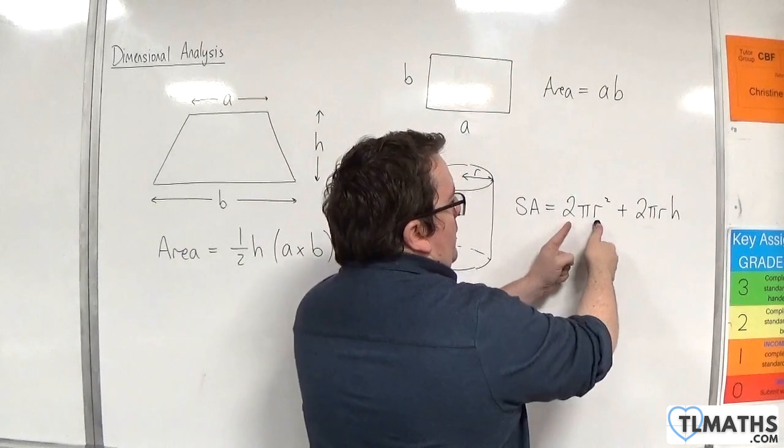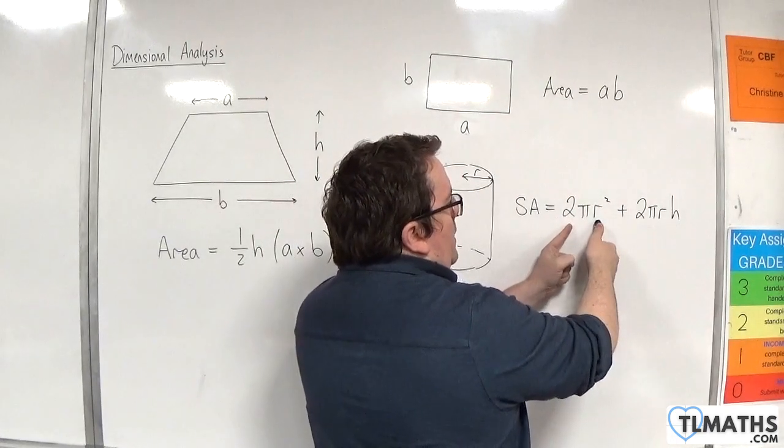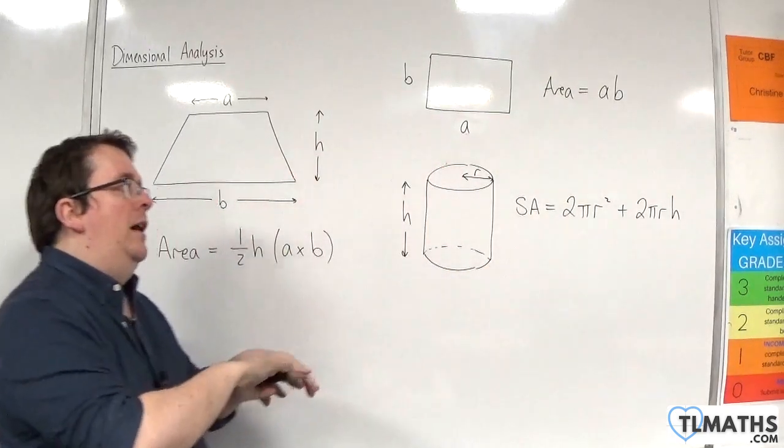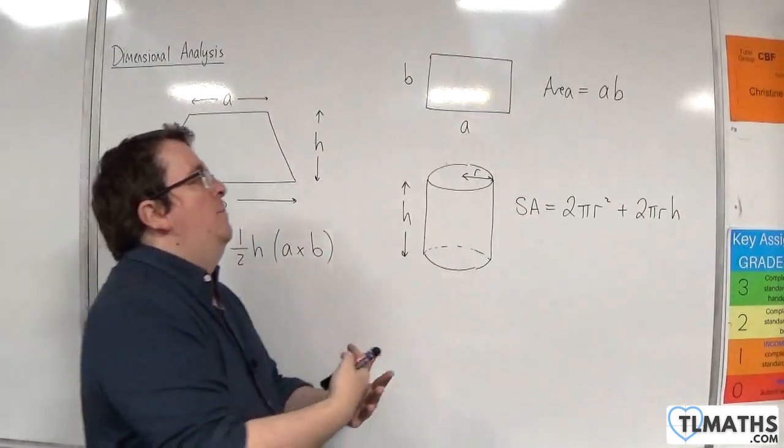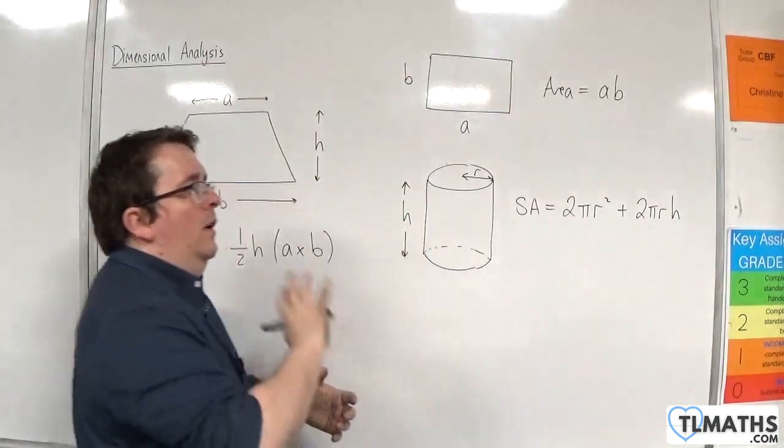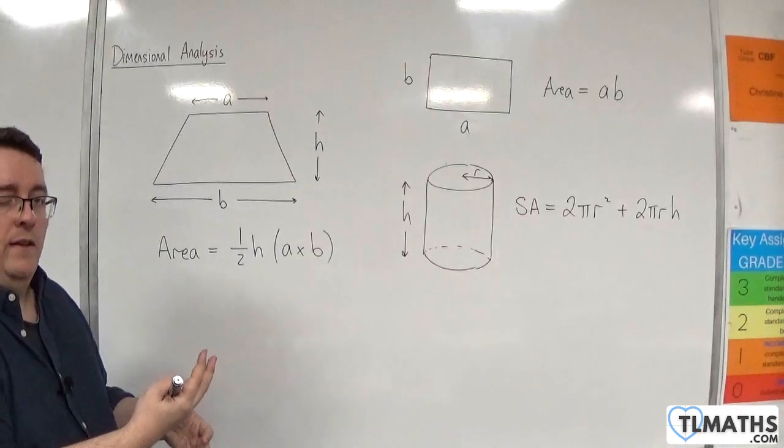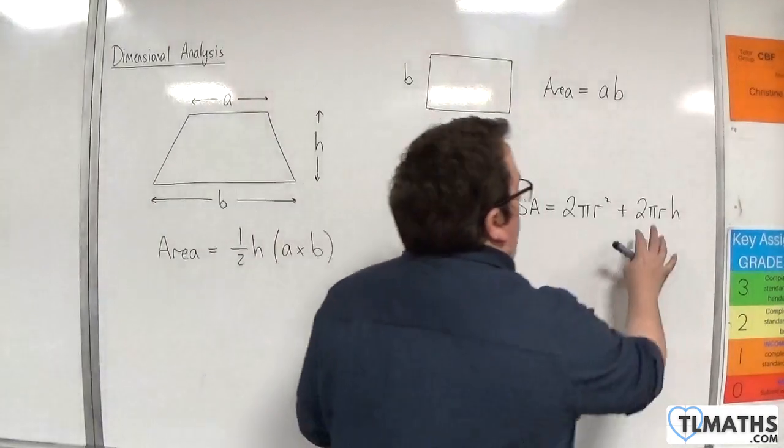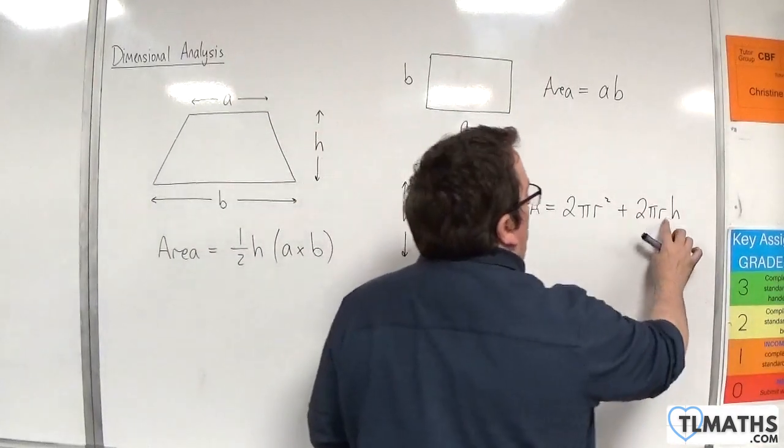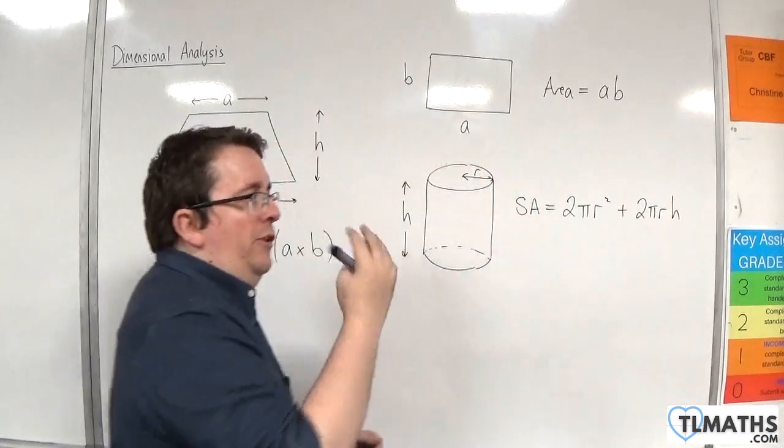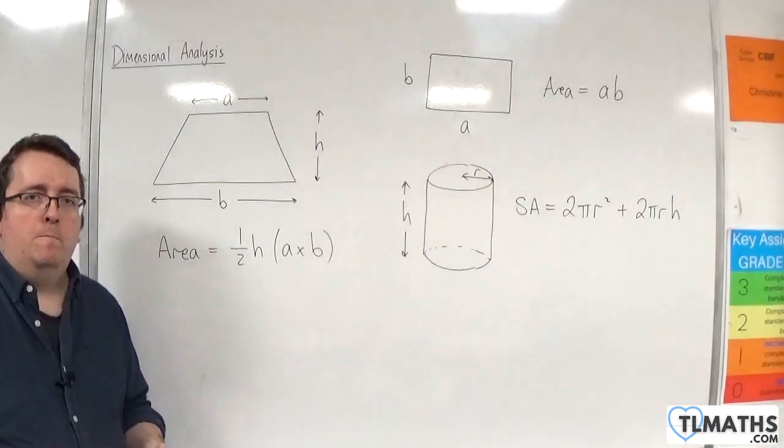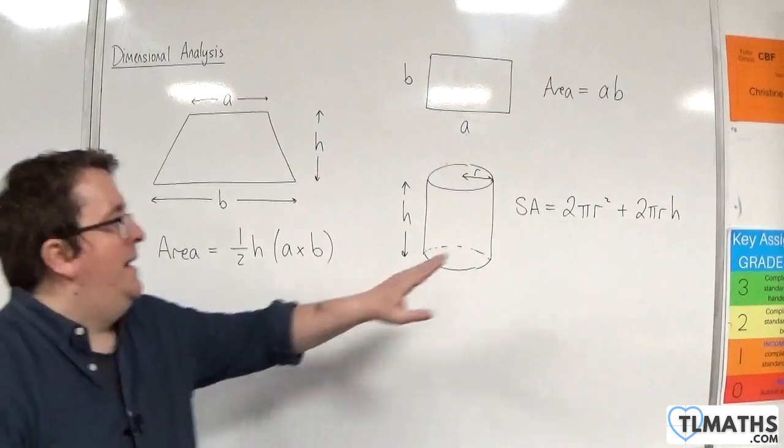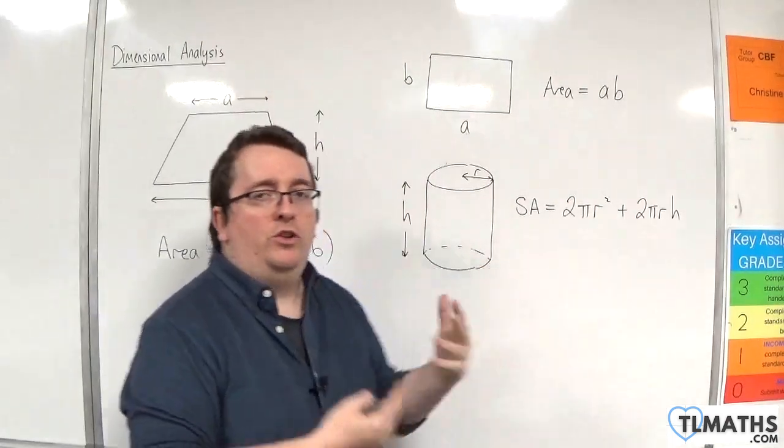So 2πr² is an area. The 2π, that's dimensionless, but you've got two lengths, r and r, multiplied together. That's an area. 2π is dimensionless, but we've got r times h—two lengths multiplied together. So it's an area. And you're adding an area to an area, which we know we can do.